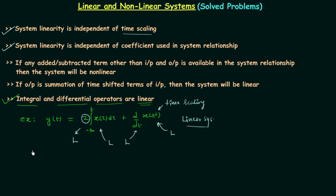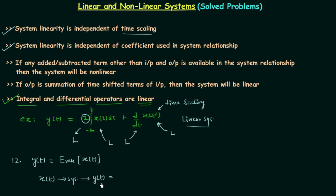Now we will solve the 12th problem, through which we will find out the nature of even and odd operators. We start with the even operator: output y(t) is equal to the even component of the input signal x(t). The even component of x(t) is what the system returns as its output. This is the functionality of the system — it returns the even component of the input signal.